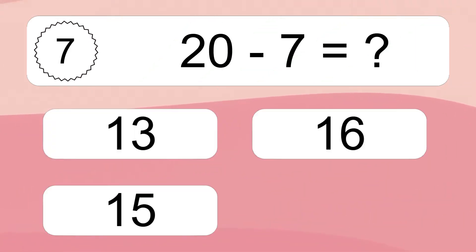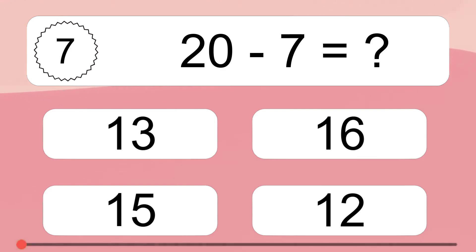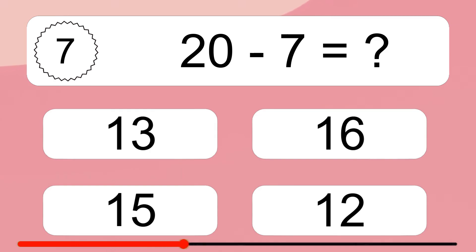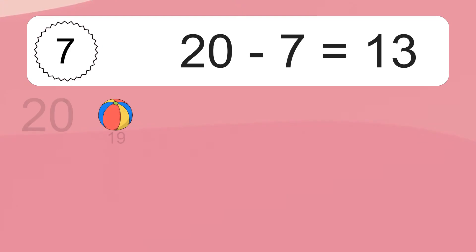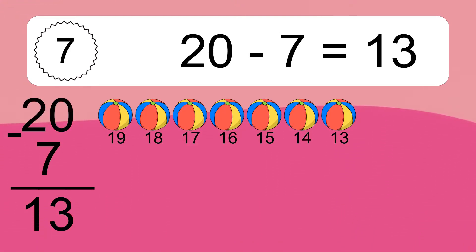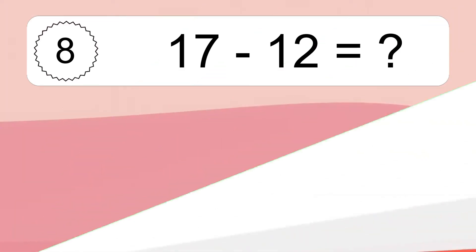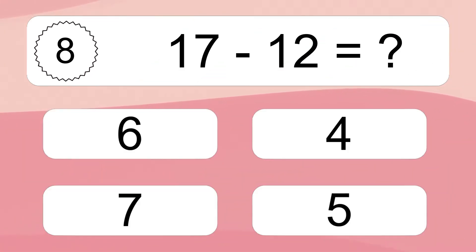20 minus 7 equals what? 20 minus 7 equals 13. Let's count it: 19, 18, 17, 16, 15, 14, 13.